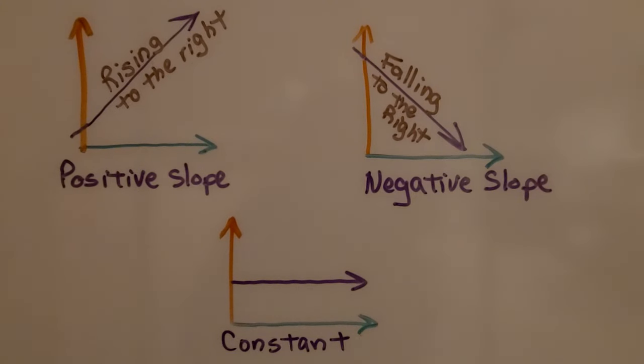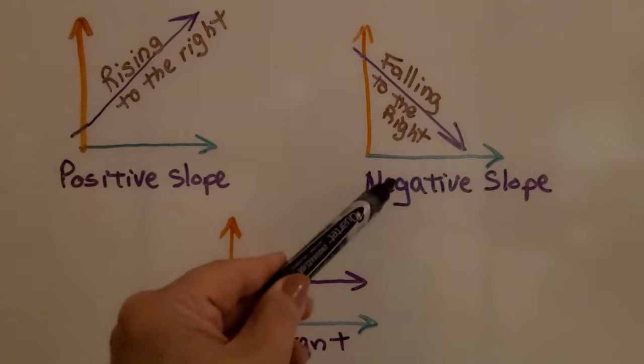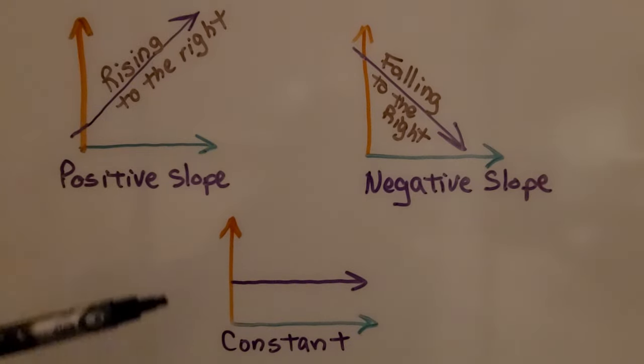I want you to remember: if our graph is rising to the right, it's a positive slope. And if it's falling to the right, it's a negative slope. And if it's horizontal, then it's constant.